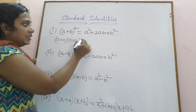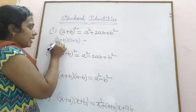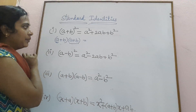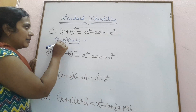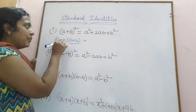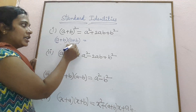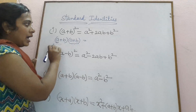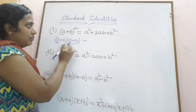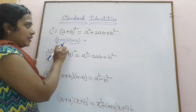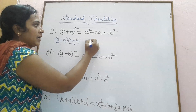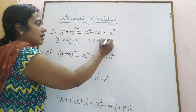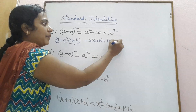We expand this expression. The first term a is multiplying the total factor a plus b, and the second term b of the first expression is also multiplying the second factor. So we get a into a plus b, plus b into a plus b.